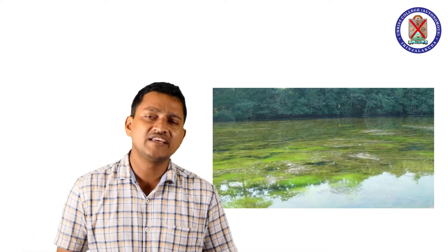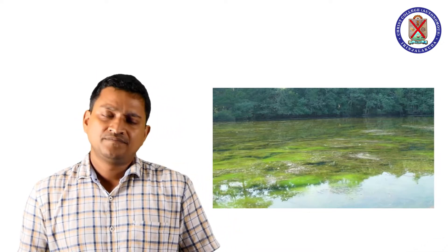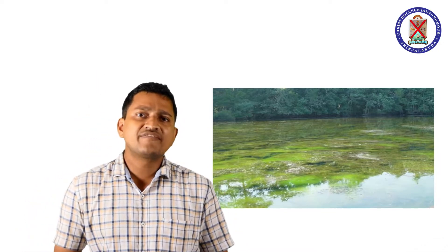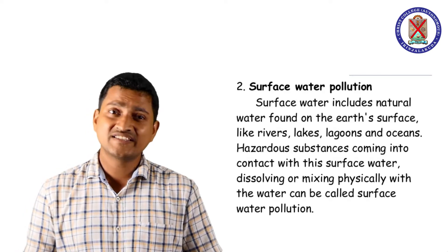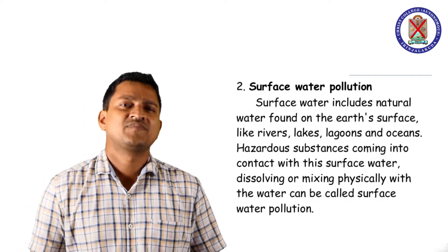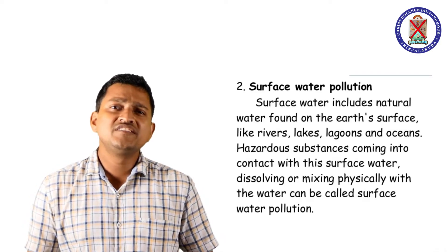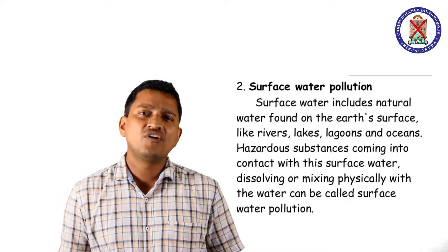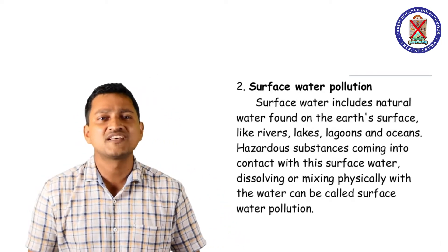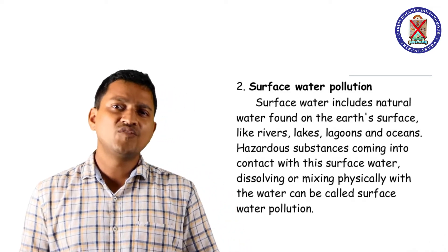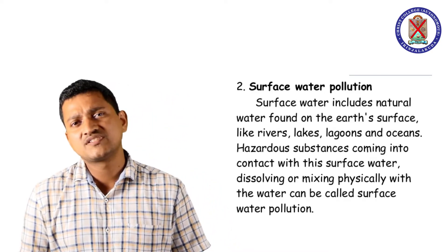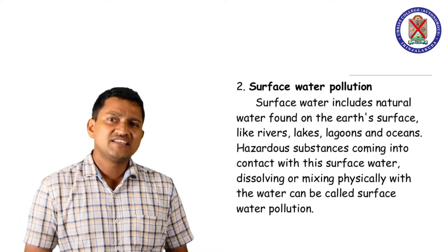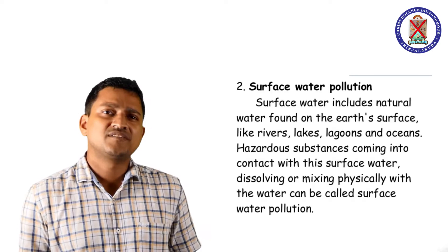The impact of nutrient pollution is algal bloom and eutrophication. The second type is surface water pollution. Surface water includes natural water found on the earth's surface like rivers, lakes, lagoons and oceans. Hazardous substances coming into contact with this surface water — dissolving or mixing physically — constitute surface water pollution. The same type of pollution occurring in groundwater is known as groundwater pollution. The main causative factor includes discharge of waste from municipal or industrial areas into the water system.